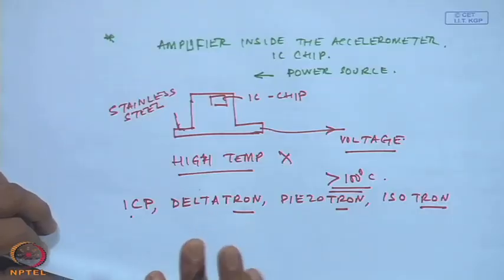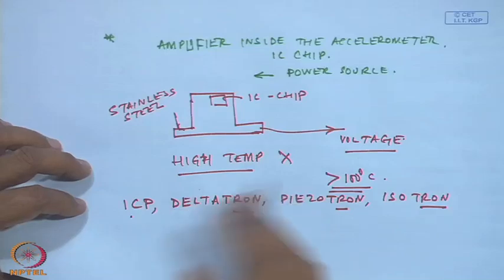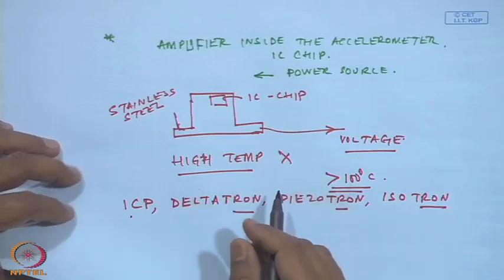The key disadvantage of ICP-type accelerometers is that they cannot be subjected to high temperatures, because the IC chips inside will be damaged. In experiments on high-speed gear boxes, accelerometers were lost because a technician mistakenly placed ICP-type accelerometers on a very hot bearing for 30–40 minutes — the IC chip got fried due to high temperature. We must be careful when using such ICP-type accelerometers.